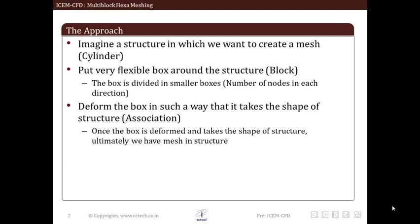For example, if we need to mesh a cylinder, we can take a block and put it around the cylinder. Next, we divide the block into n number of small boxes by putting n number of nodes on edges of that block.